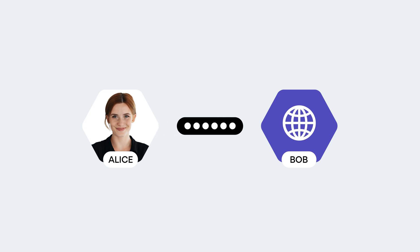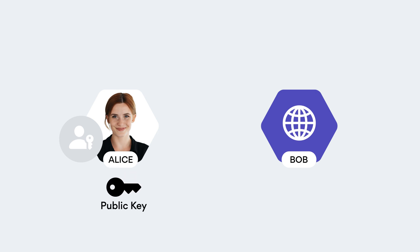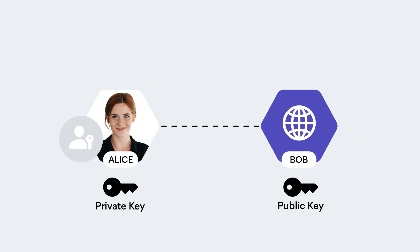Here's an example of how this technology works. Let's say Alice wants to sign up to a new e-learning website called Bob. Instead of creating a potentially weak password that could be breached or stolen by a hacker, Alice could use a PassKey. This would involve Alice's device generating a unique PassKey pairing — one key would be public and stored by Bob, and the other key would be private and stored securely on Alice's device. When Alice tries to log in to Bob, Bob sends a question to Alice's device, which can only be answered by the related PassKey stored on her device. Once the key pairing is verified, Alice's login request is granted.